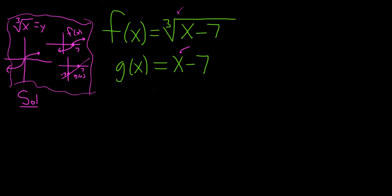One of the first things you should always do in these problems is attempt to find any points of intersection. So let's set them both equal to each other. We have the cube root of x minus 7, and that's equal to x minus 7.